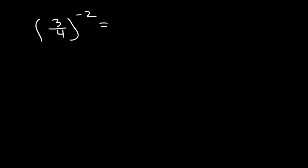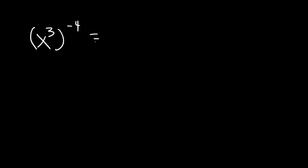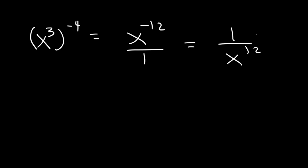So if we have 3 over 4 raised to negative 2, we simply flip the fraction — moving the 3 to the bottom and the 4 to the top — and the exponent changes sign to positive 2. Now we can square each number: 4 squared is 16, 3 squared is 9, so the answer is 16 over 9. Likewise, for x cubed raised to the negative 4: first multiply 3 times negative 4, which is negative 12. Then make the negative exponent positive by moving x to the bottom, giving 1 over x to the positive 12.